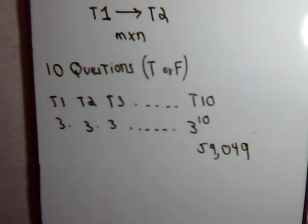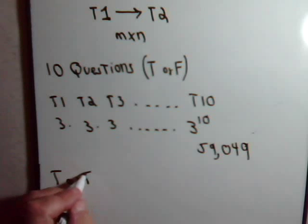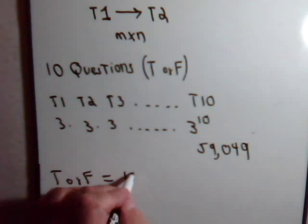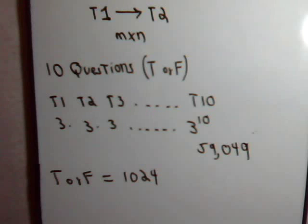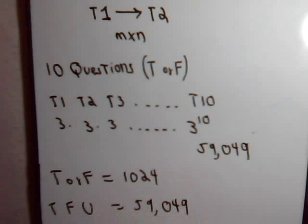So just considering the possibility of a set of true or false, that gave us just a little over a thousand possibilities. Now consider either true, false, or unanswered, and that dramatically increases it all the way to just over 59,000 possibilities.